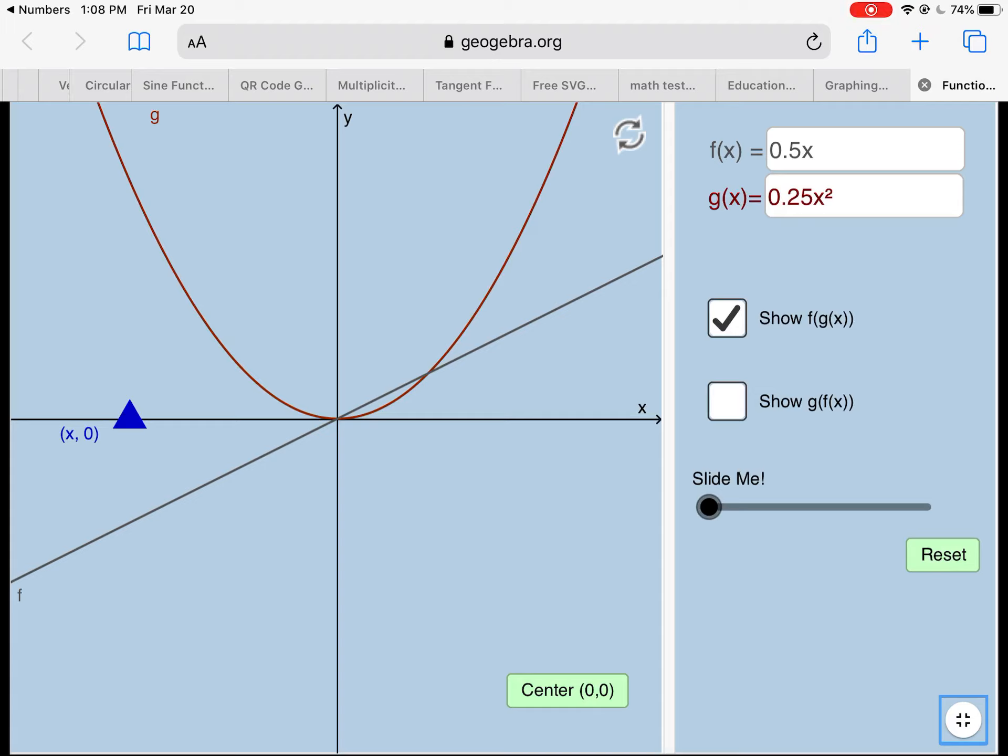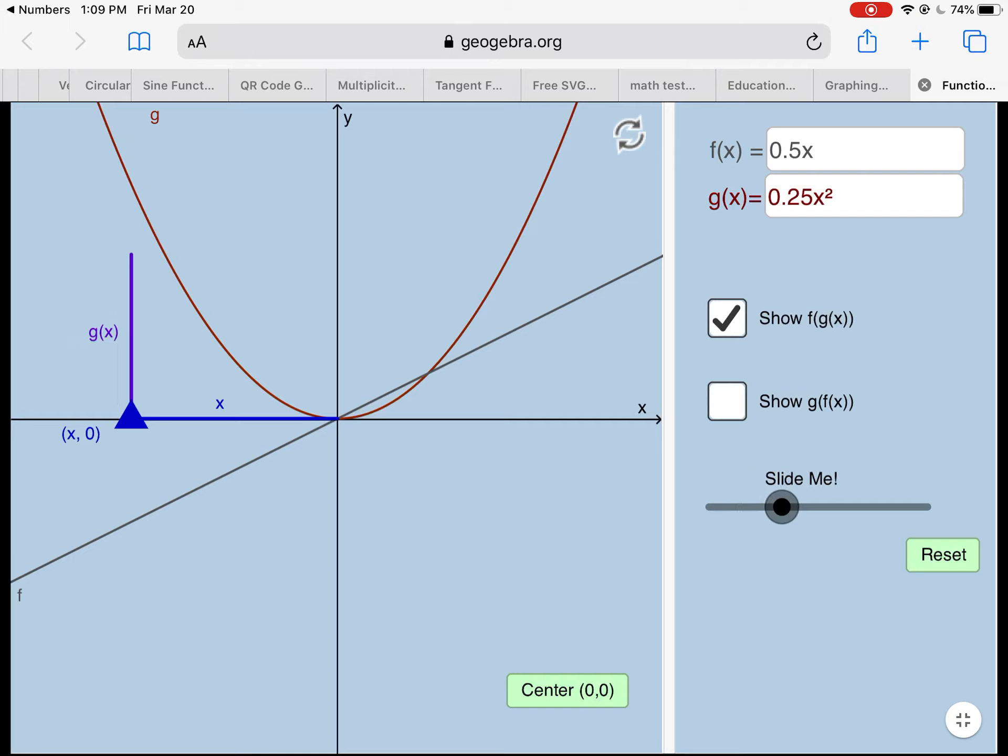And notice I have the box checked to show f of g of x. I can move this triangle wherever I want. This is going to represent the x value that I start off the function with. So I'm going to begin by plugging a number in for x into the function g. In this case, g is the parabola. When I plug that number in for x, it's going to give me a y value. That y value is represented by the notation g of x.